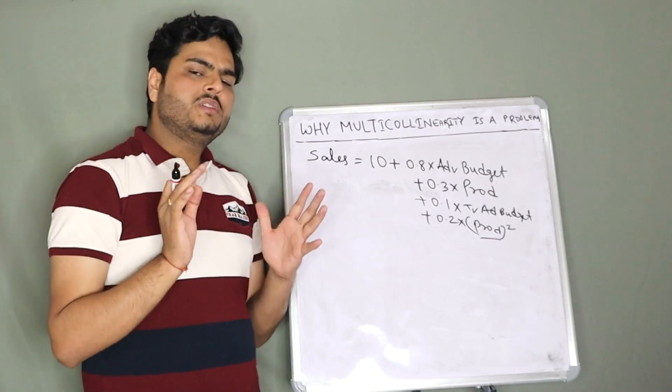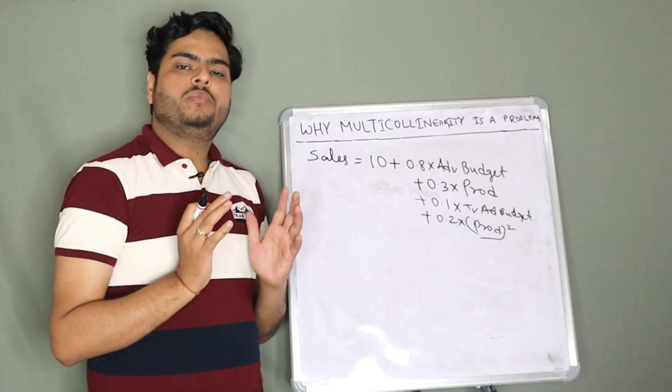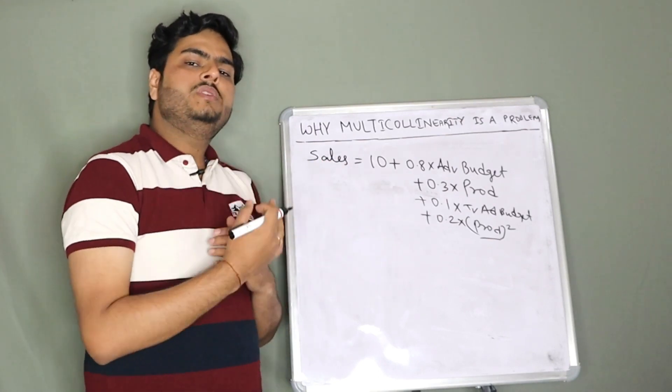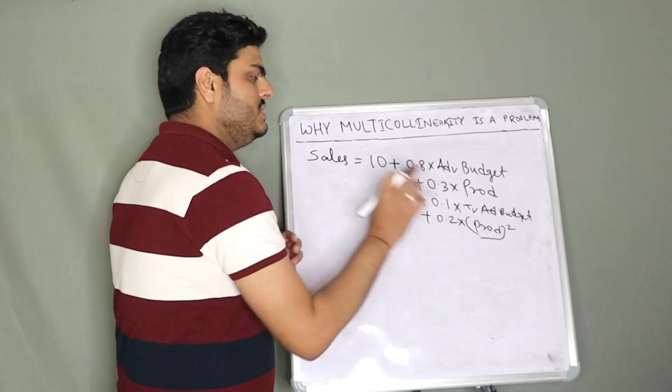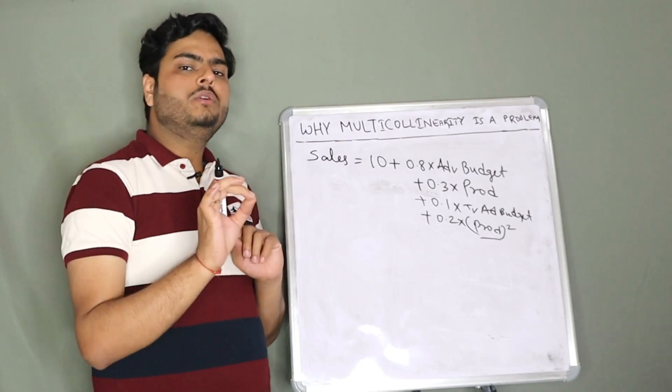Now this new variable is coming from the prod variable, so these two variables are highly correlated again. How has it come? It has come from the structure of the data. So it's quite possible that while doing feature engineering or data preprocessing, we might create some of these. These are the ways in which you will have a multicollinearity scenario in your data.